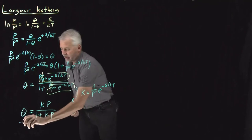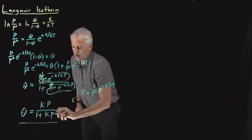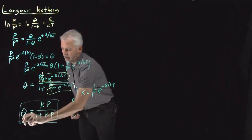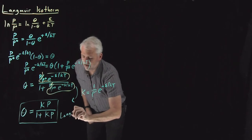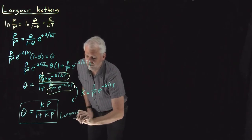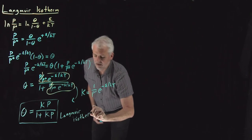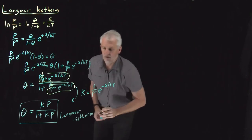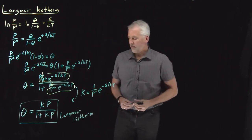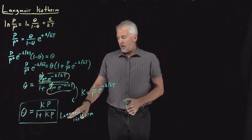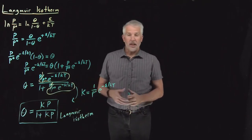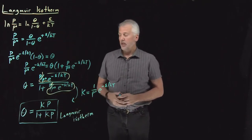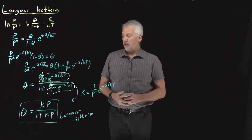This equation — θ = KP/(1 + KP) — is one we'll come back to several times. It's called the Langmuir isotherm, named because it's the behavior predicted by the Langmuir model that led to this particular equation.